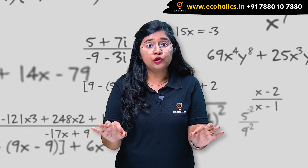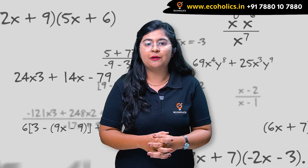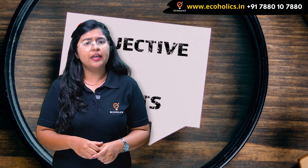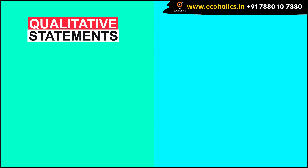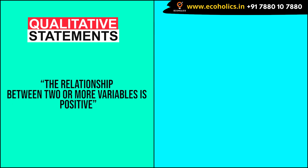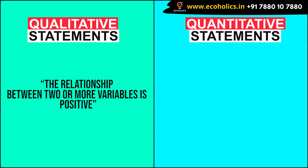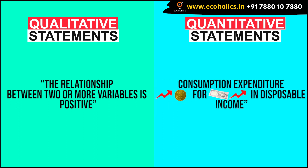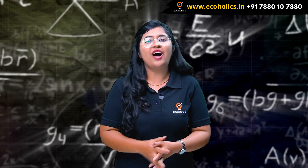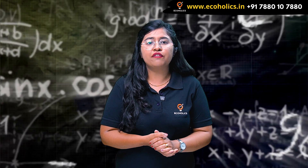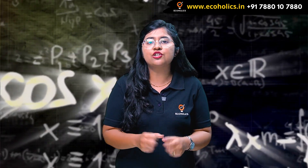Econometrics uses economic theory, mathematics, and statistical inferences to quantify economic phenomena. It converts theoretical economic models into useful tools for economic policy making. A key objective is to convert qualitative statements — such as 'the relationship between two variables is positive' — into quantitative statements, such as 'consumption expenditure increases by five rupees for every 50 rupees increase in disposable income.'